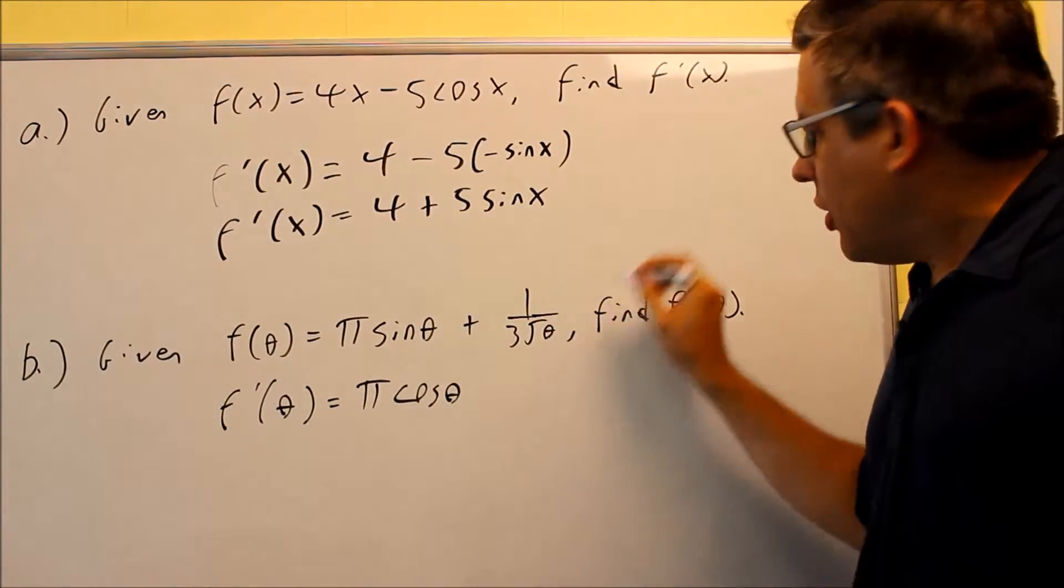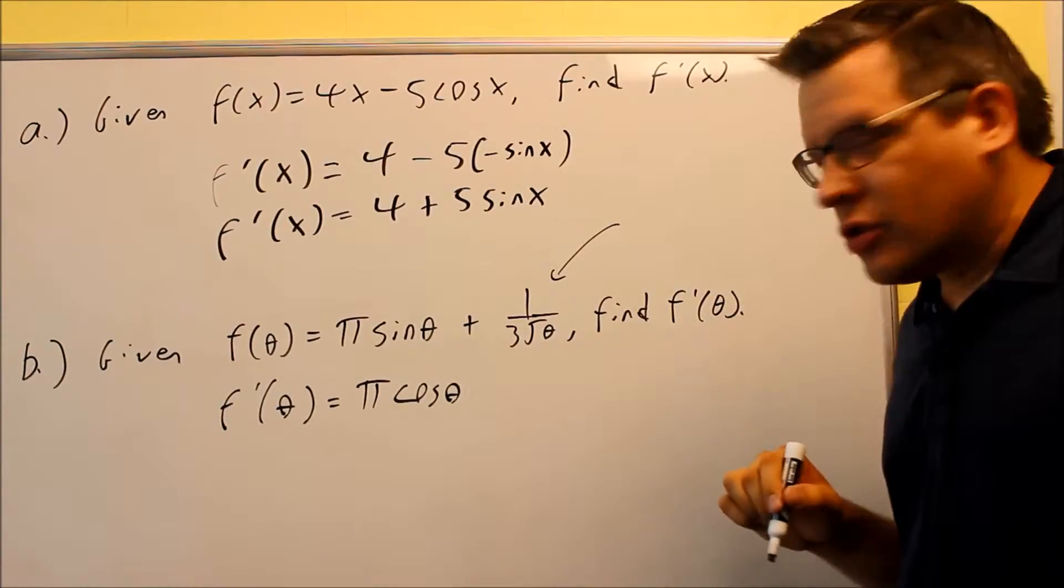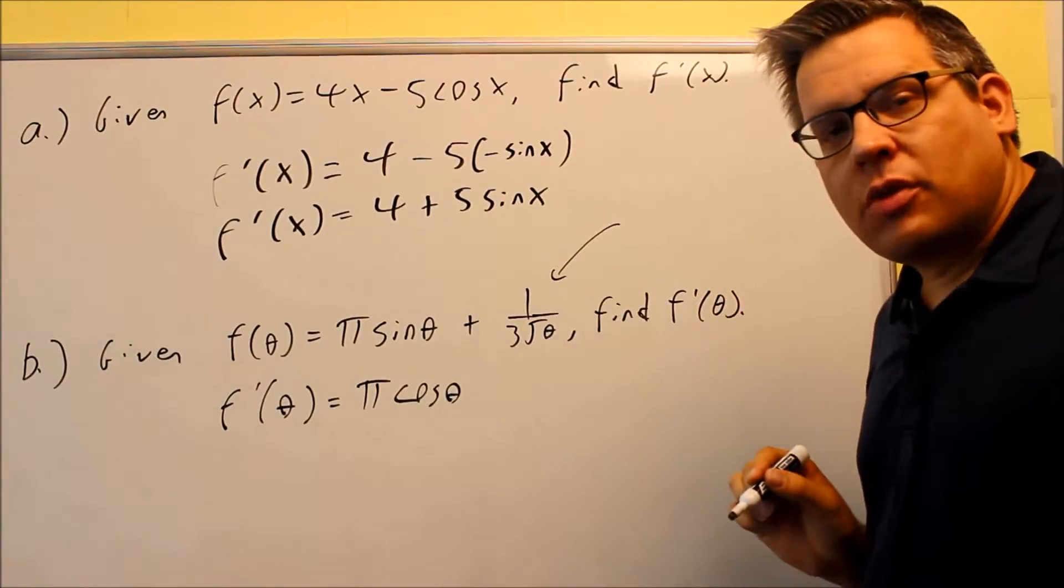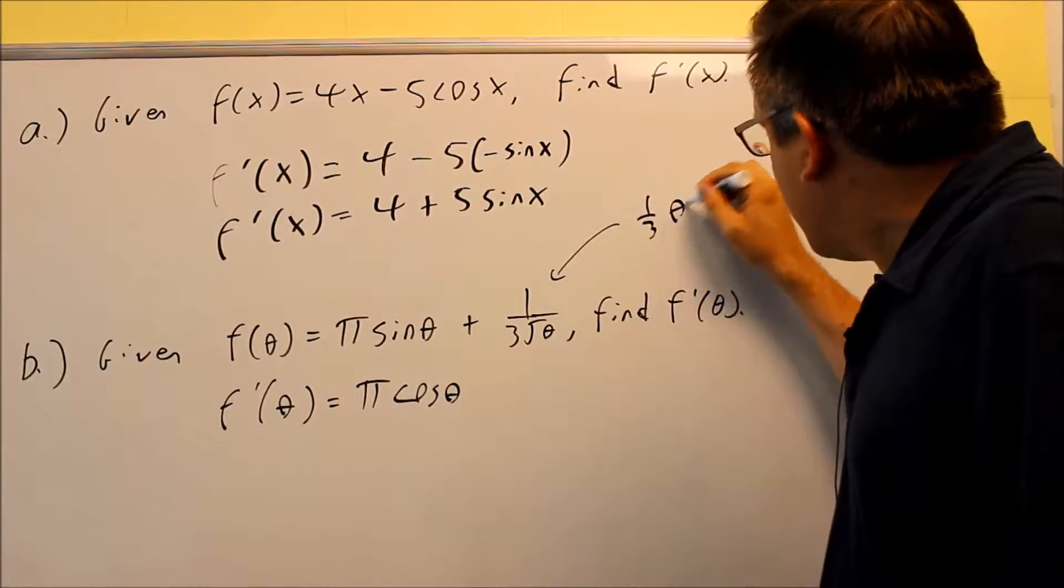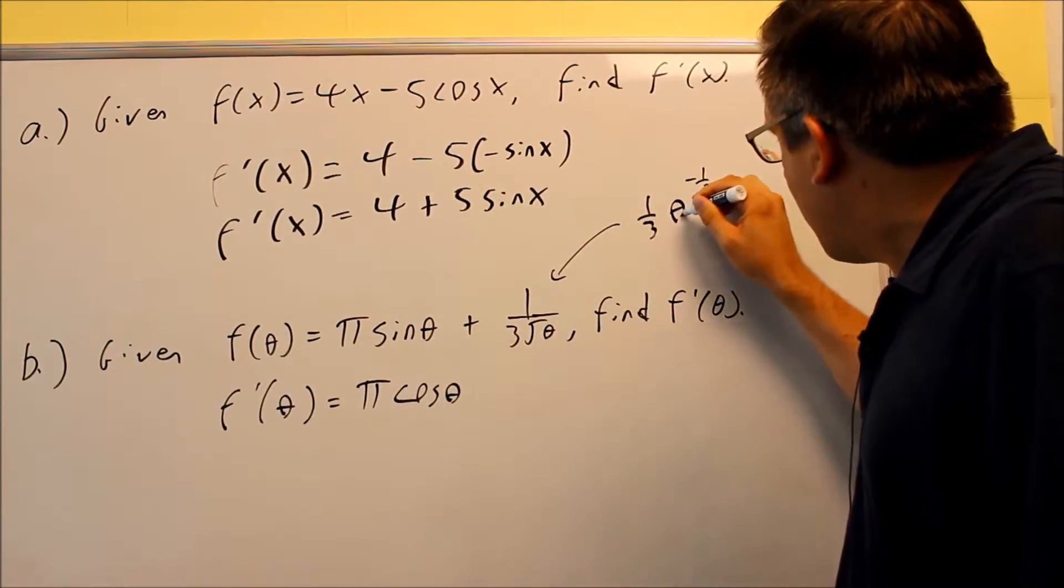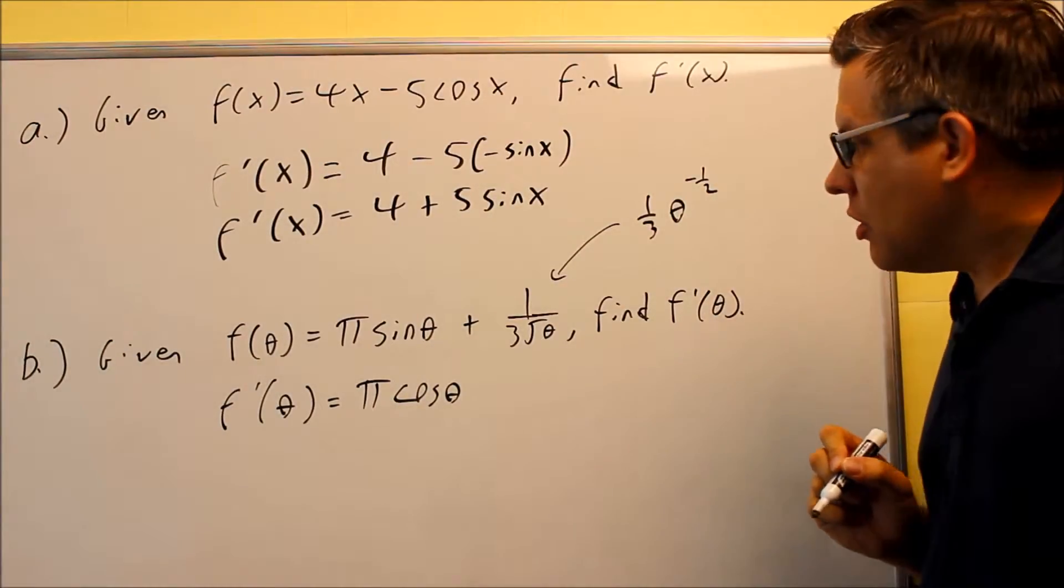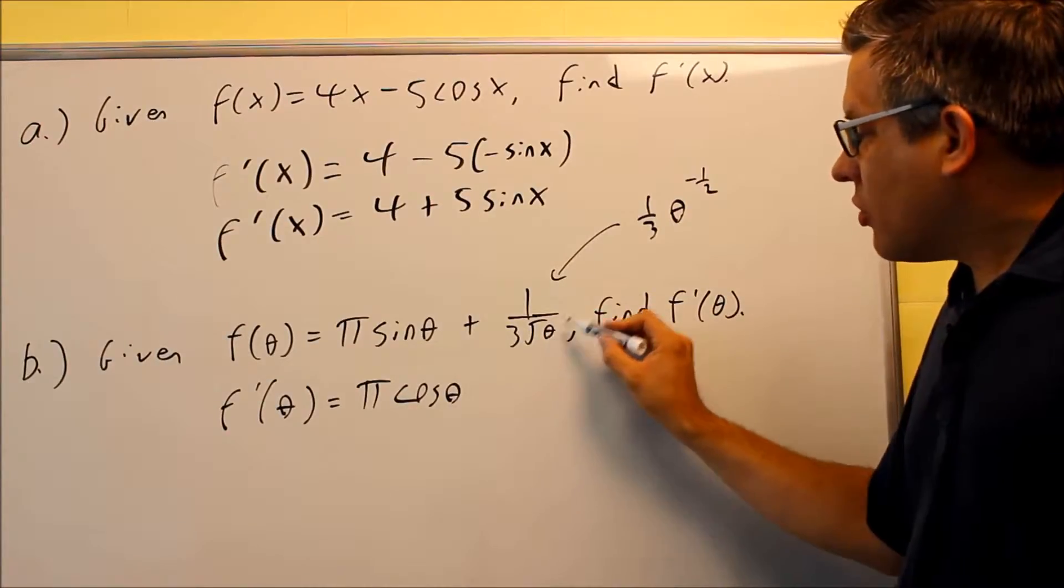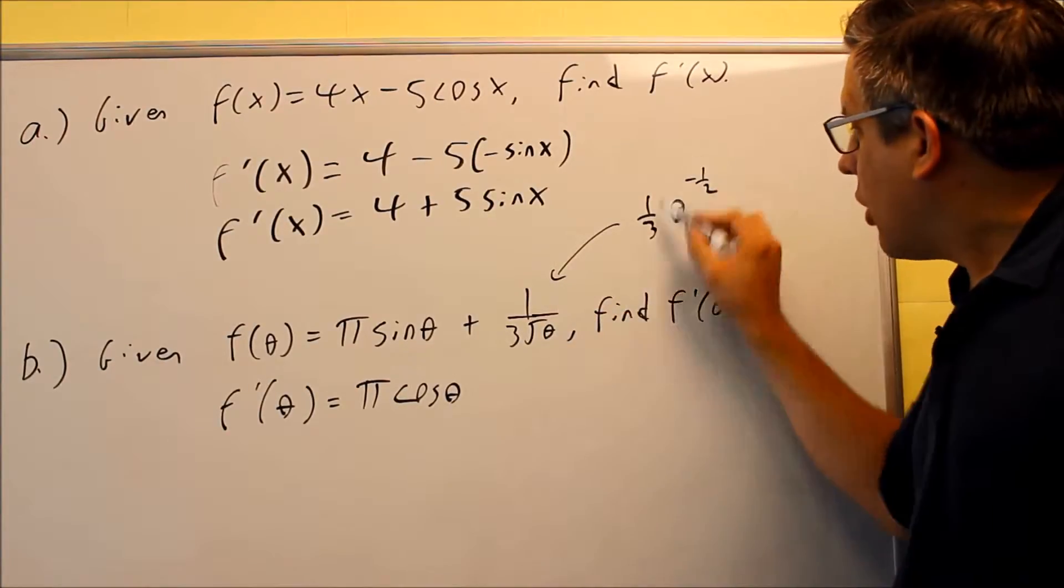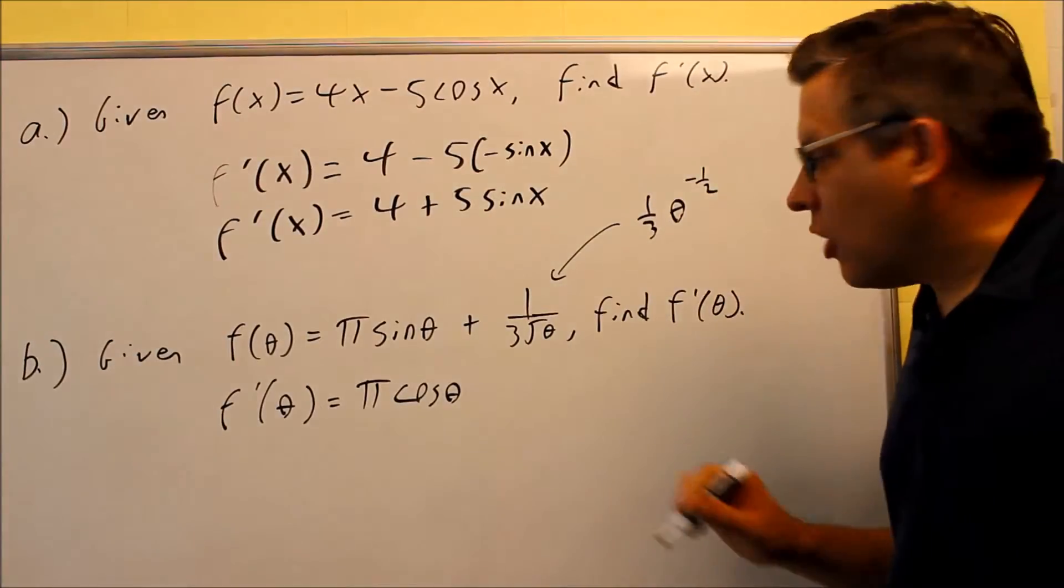Now what are we going to do about this one here? What you can do is we want to apply the power rule to this. So I'm going to rewrite this term and I'm going to rewrite it as 1/3 θ^(-1/2). I'm writing it this way purposely so I can take the derivative using the power rule. So again, the 1/3 I separate it. This is θ to the 1/2 power down below and I brought it up to make it a negative power there. So now I'm ready to apply the power rule.